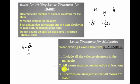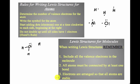Number two: all atoms must be connected by at least one bond — you shouldn't have a hydrogen just sitting there unbonded. Number three: all the electrons are arranged so everything is stable. There are exceptions to the stability rule that we'll look at in the next video, but if you have these three things done, you're going to be in pretty good shape.